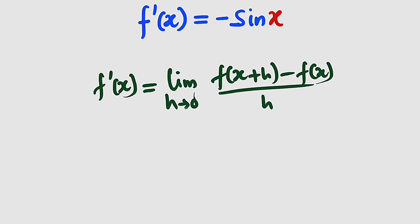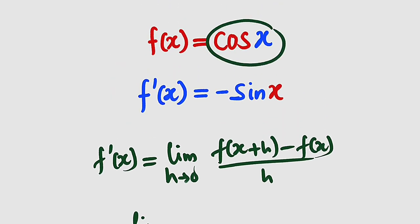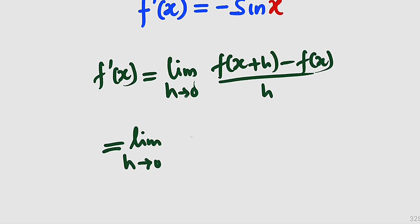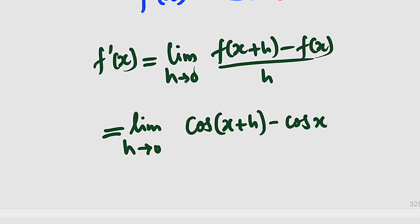So now let us substitute everything here. Remember that our function is cosine x. So this is equal to the limit as h approaches 0 of f of x plus h, which means cosine of x plus h, because we are replacing x with x plus h. So this is cosine of x plus h minus f of x, which is nothing but cosine x. Divide by h. So this is the limit we are going to evaluate in order to get the derivative of cosine x.